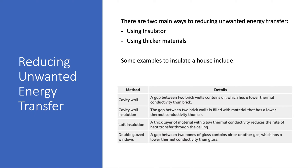We can use an insulator because the heat energy which passes through the material is slow. You can also use thicker materials because this creates a bigger insulating layer. So here are four main things you can use to insulate a house.